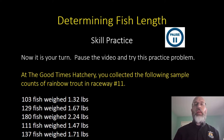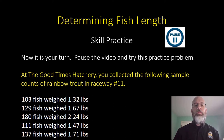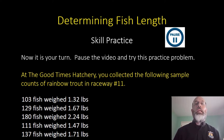I'd recommend pausing this video after I read through the problem, work the problem on your own, and then come back for the answers. Here is the skill practice: at the Good Times Hatchery, you collected the following sample counts of rainbow trout in Raceway number 11 — 103 fish at 1.32 pounds, 129 fish at 1.67 pounds, 180 fish at 2.24 pounds, 111 fish at 1.47 pounds, and 137 fish at 1.71 pounds. Calculate the average fish length. Go ahead and pause here, and when you come back we'll walk you through the answers.